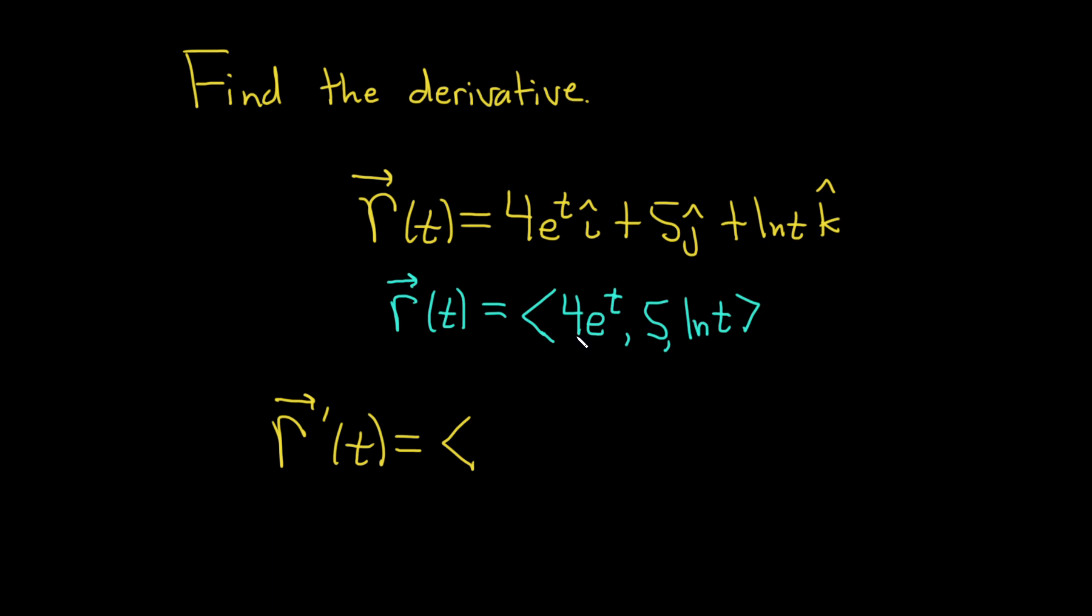Well, the 4 is a constant, so you just differentiate e to the t, and its derivative is e to the t. Then the derivative of 5 is 0, and the derivative of ln t would be 1 over t. So that would be the answer in component form.